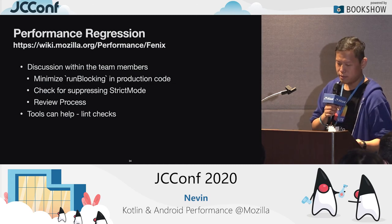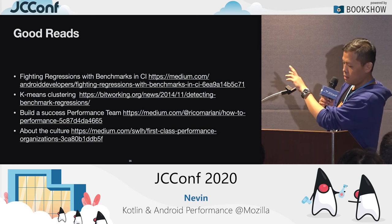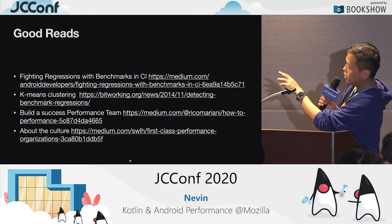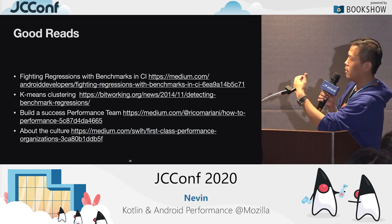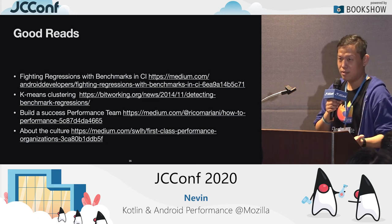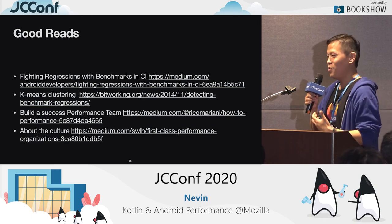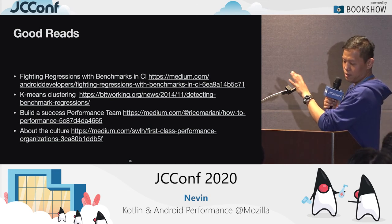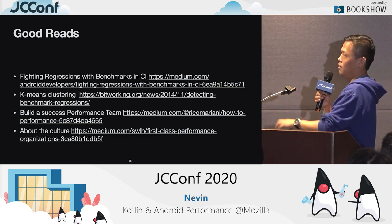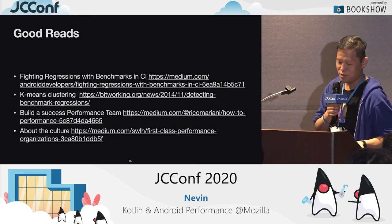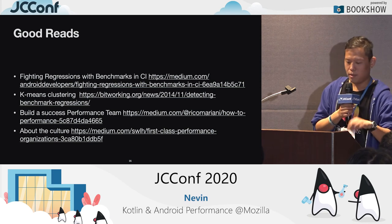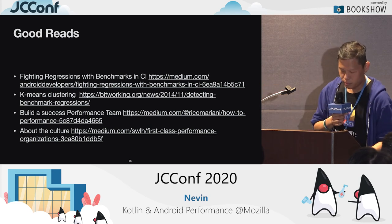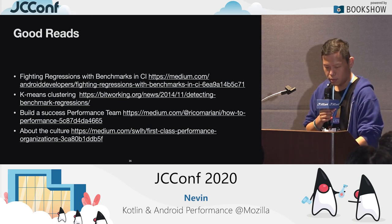There are some good reads — the slides will be shared later. The first two articles are by the Google team. The first is about how they find performance regression in CI. The second article is about using K-means clustering — when you collect a lot of numbers in CI and get performance regression alerts, if you cry too many times with false alarms, people start ignoring them. K-means clustering is how they analyze the numbers to make sure it's a real regression. The other two articles are about mindset, by the Facebook mobile performance lead.